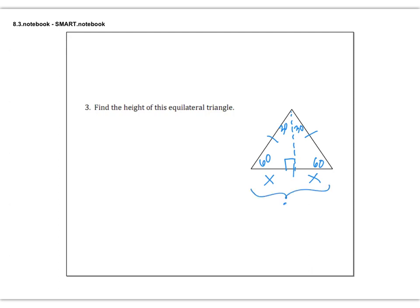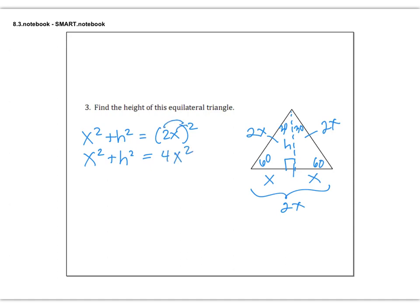This vertex at the top would get split into 30 and 30. So if we take half of this large triangle, we have a 30-60-90 triangle. If we drop down that altitude or height, this distance and this distance over here will be congruent. So this whole side would be called 2x if each of these smaller parts are x. Since it's an equilateral triangle, we could also say this side is 2x and this side is 2x. Let's call the height h and do the Pythagorean theorem: x squared plus h squared equals 2x squared.